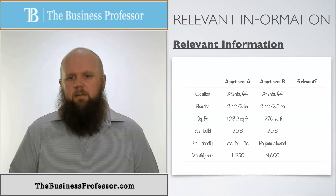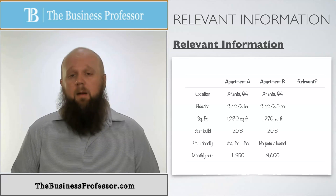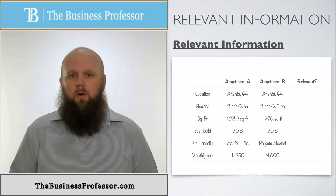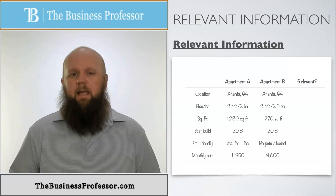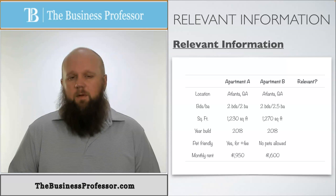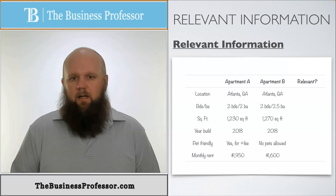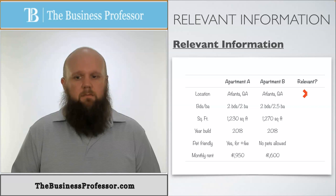So let's look at location. Apartment A and apartment B are both located in, let's say, Atlanta, Georgia. Well, if they're both located in the same place, then they're not going to be different among the options. So this would be irrelevant.